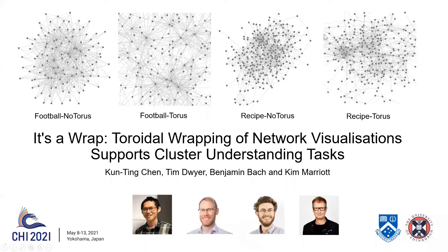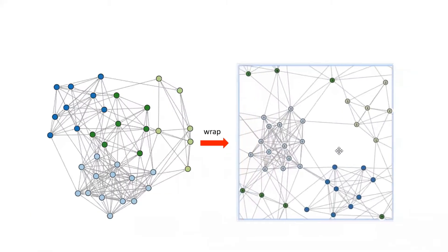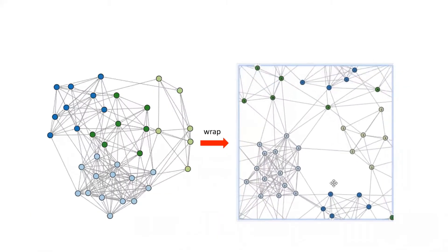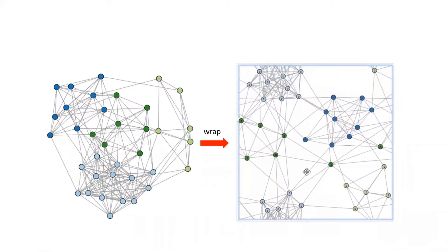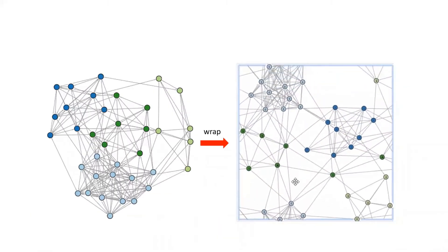We explore network visualization on the 2D Torus topology that wraps in a North-South and East-West fashion for better distribution of networks than traditional node-link diagrams. Such Torus layouts continuously wrap when the viewpoint is panned.